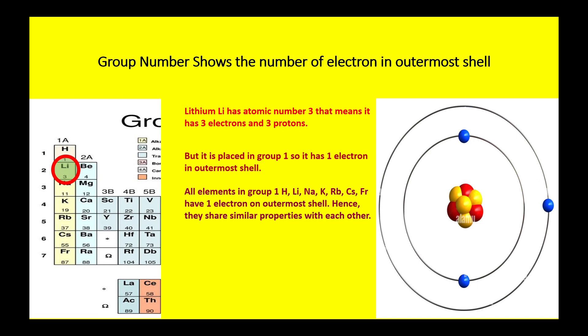This is the reason lithium is placed in group 1A. All the elements in group 1A — hydrogen, lithium, sodium, potassium, rubidium, cesium, francium — all have different atomic numbers, but they all have one electron in their outermost shell.